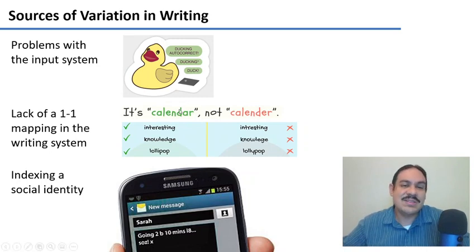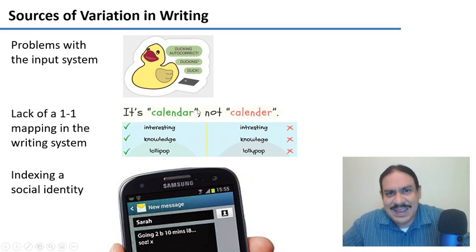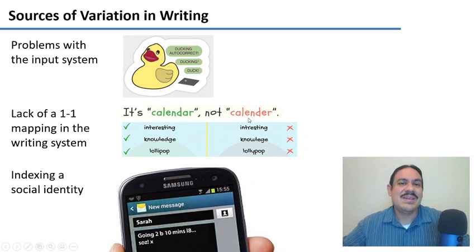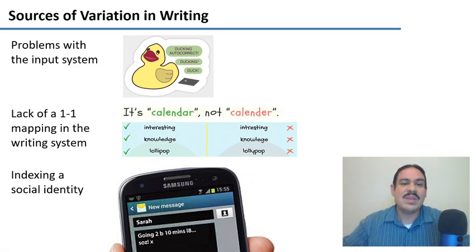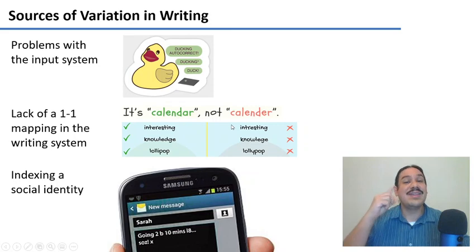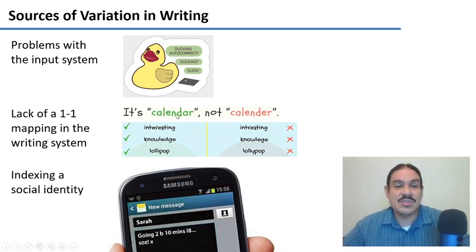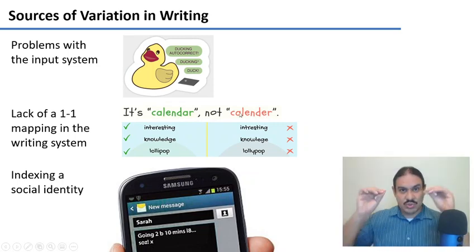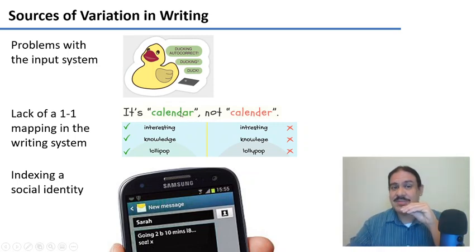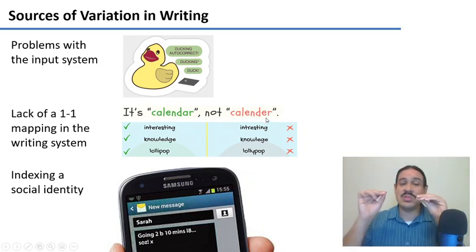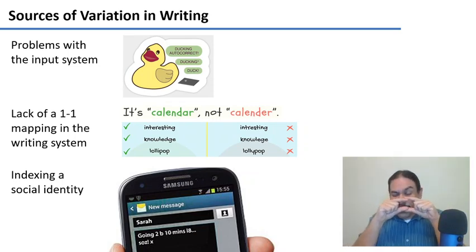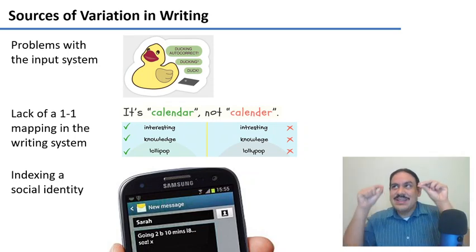Likewise, in the final syllable — 'calendar' vs. 'calendur' — notice that these two sound exactly the same. The problem here is something we studied in week three regarding phonology. In English, these are unstressed syllables, so because they're unstressed, their vowels are going to change and become schwas. So in reality, even if you have an 'ah' or an 'e' in the syllable, it's always going to become a schwa. There's no way to know what the correct mapping of this sequence of sounds into the writing system is.